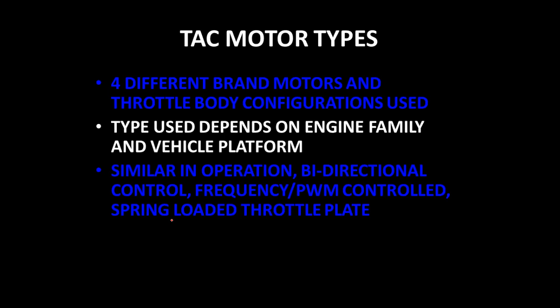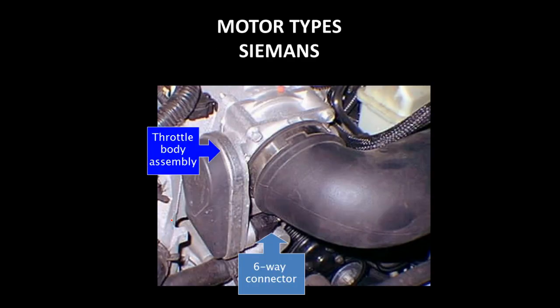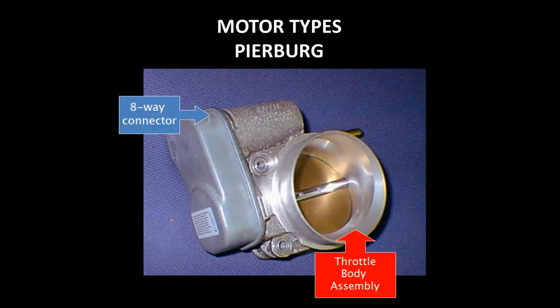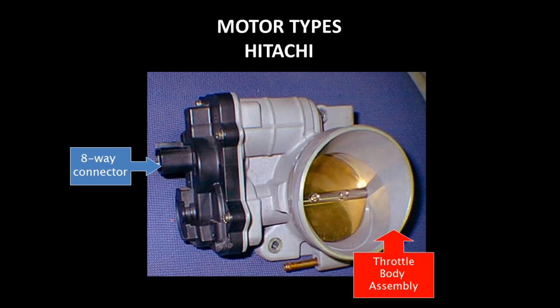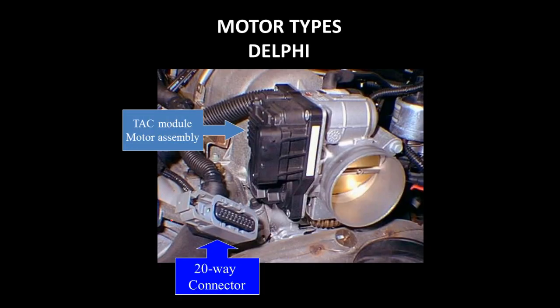There are four different brand motors and throttle body configurations used — the type used depends on the engine family and vehicle platform. They're all very similar in operation, all have bi-directional control with frequency and pulse width modulation, and the spring-loaded throttle plate is loaded into the closed position. The Siemens system, used on many passenger car applications, has a six-way connector on the bottom. The Pureberg style also used on passenger cars has an eight-way connector. The Itachi style also uses an eight-way connector. The Delphi assembly has the TAC module mounted as part of the throttle body itself and uses a 20-way connector.